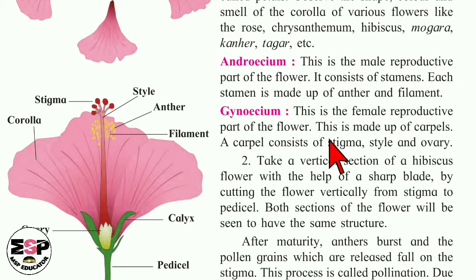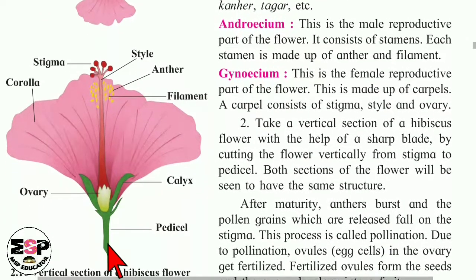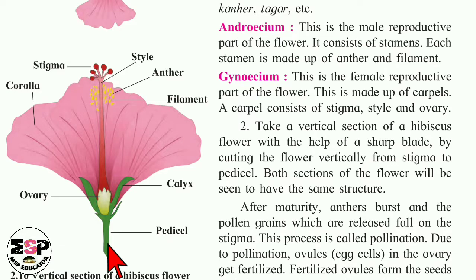The second activity is to take a vertical section of a hibiscus flower with the help of a sharp blade, by cutting the flower vertically from stigma to pedicel. You have to cut from the top end to the last end. Both sections of the flower will be seen to have the same structure.